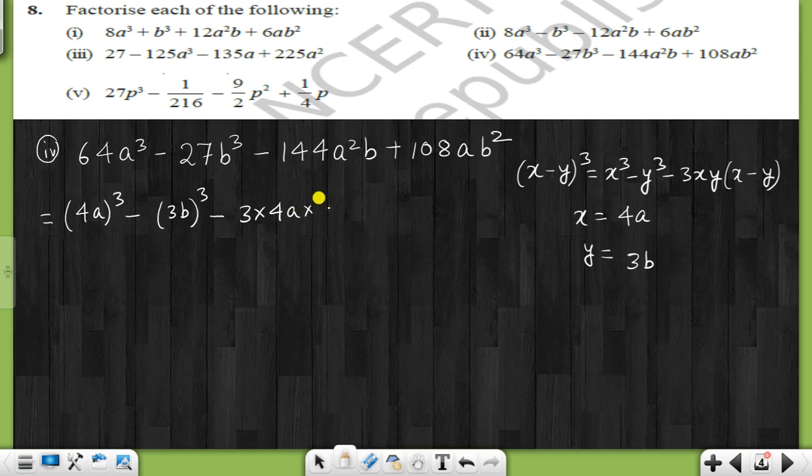Now we can multiply this number. First, let's see, 4a whole cube, 4 into 4 is 16, 16 into 4, 64a³. Then 3b whole cube is 27b³. Right?